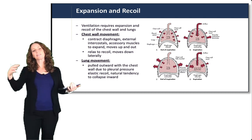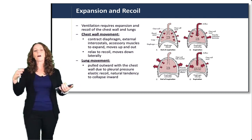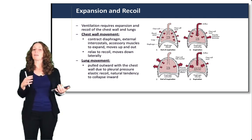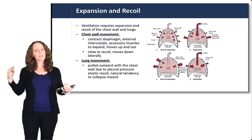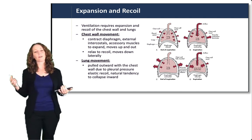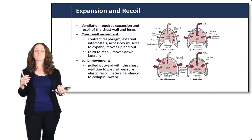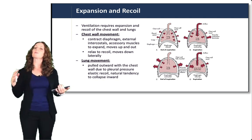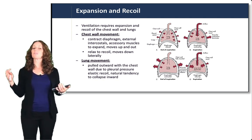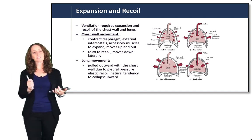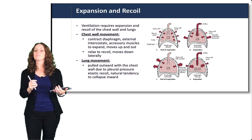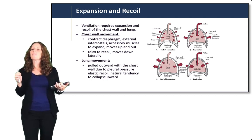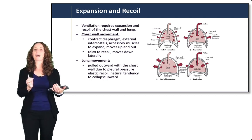The lungs expand and recoil along with the chest wall. Chest wall movement is critically important for creating the air pressure gradients needed to move air in and out of the lungs. The lungs are pulled outward with the chest wall because of the pleural pressure gradient and also because of their elastic recoil — their natural tendency to collapse inward. Expansion of the chest wall draws air in, while recoil of the lungs and chest wall forces air out.